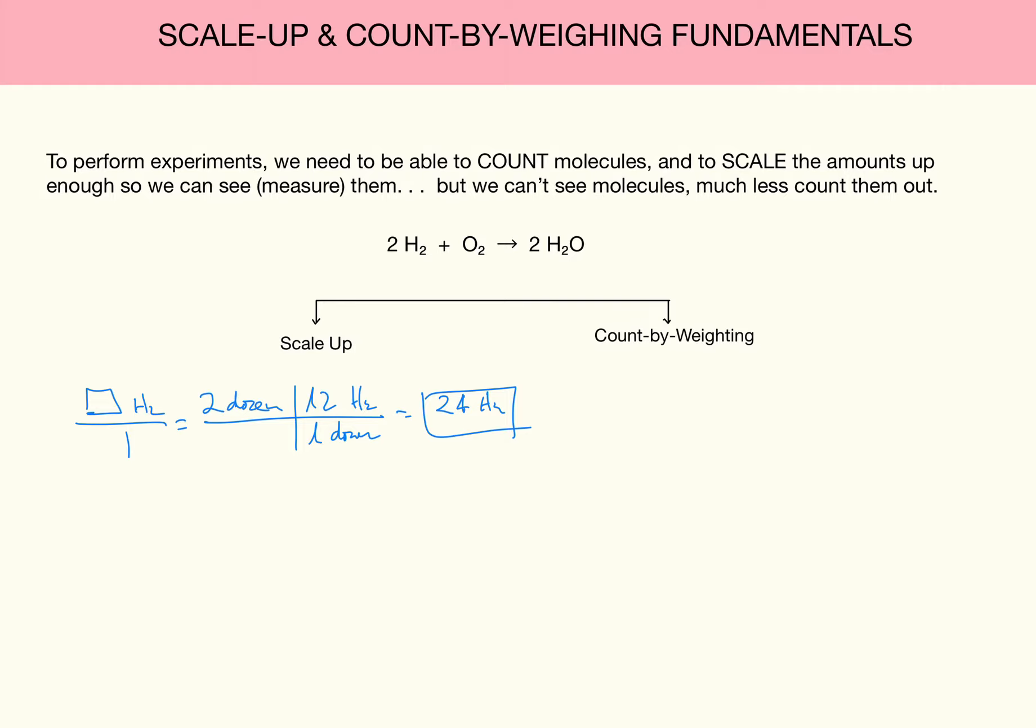And the conversion factor there we're going to use, the thing that we're going to scale it up with, is called Avogadro's number. And that is in one mole of something there's 6.02 times 10 to the 23rd of those things. So you don't need to freak out about that. You're very familiar with the dozen. One dozen of something has 12. You just got to treat this like a large dozen. One mole of something has 6.02 times 10 to the 23rd. That's it. Don't overthink it.